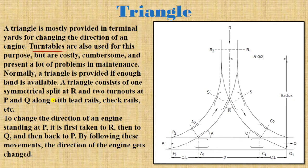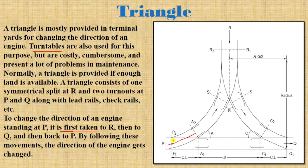The triangle consists of one symmetrical split at point R and two turnouts at points P and Q, with lead lanes, check rails, and crossings. To change the direction of an engine standing at P, it is first taken to R.